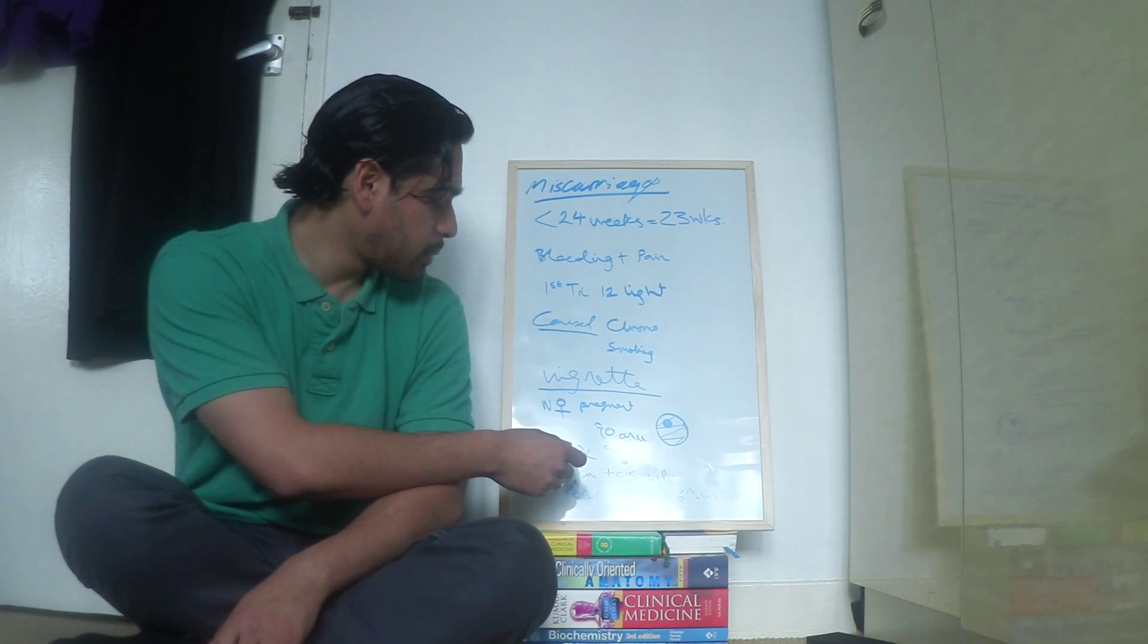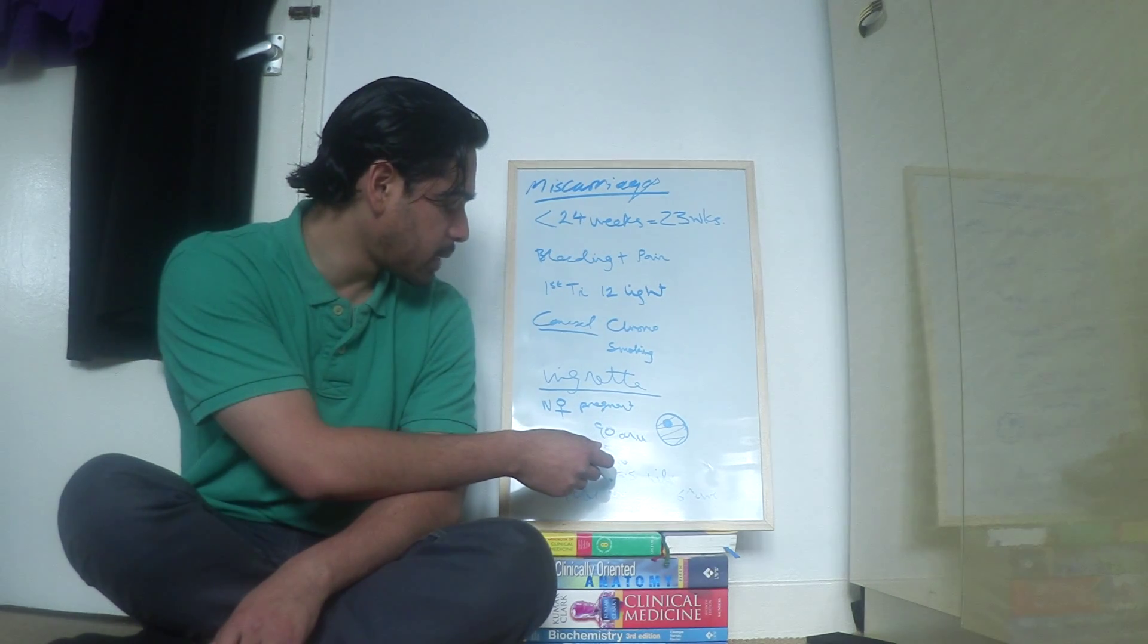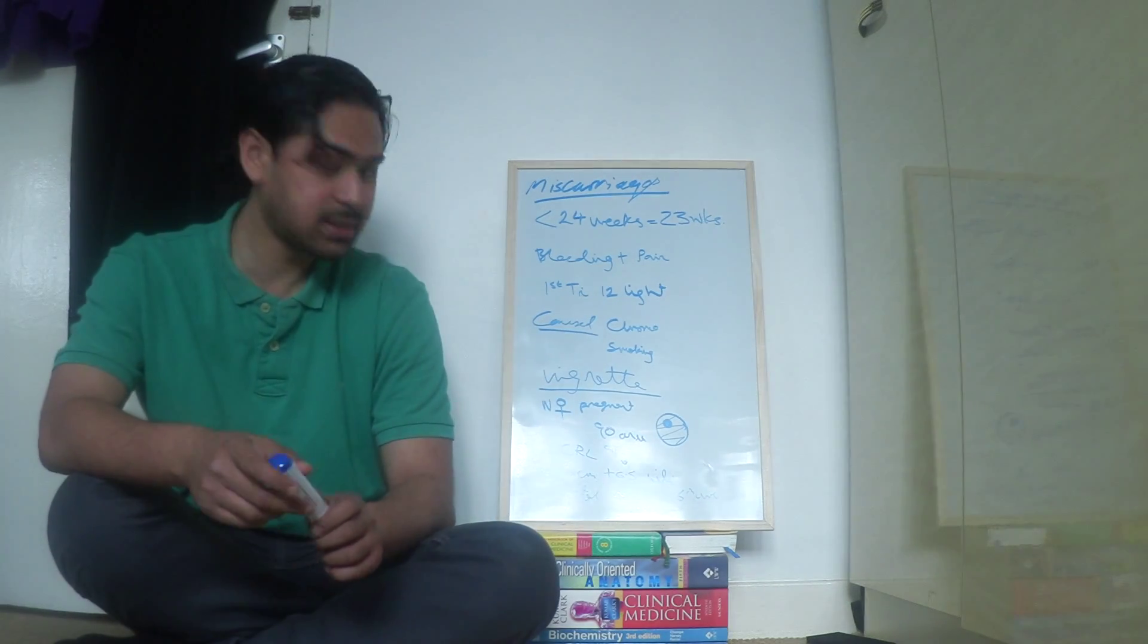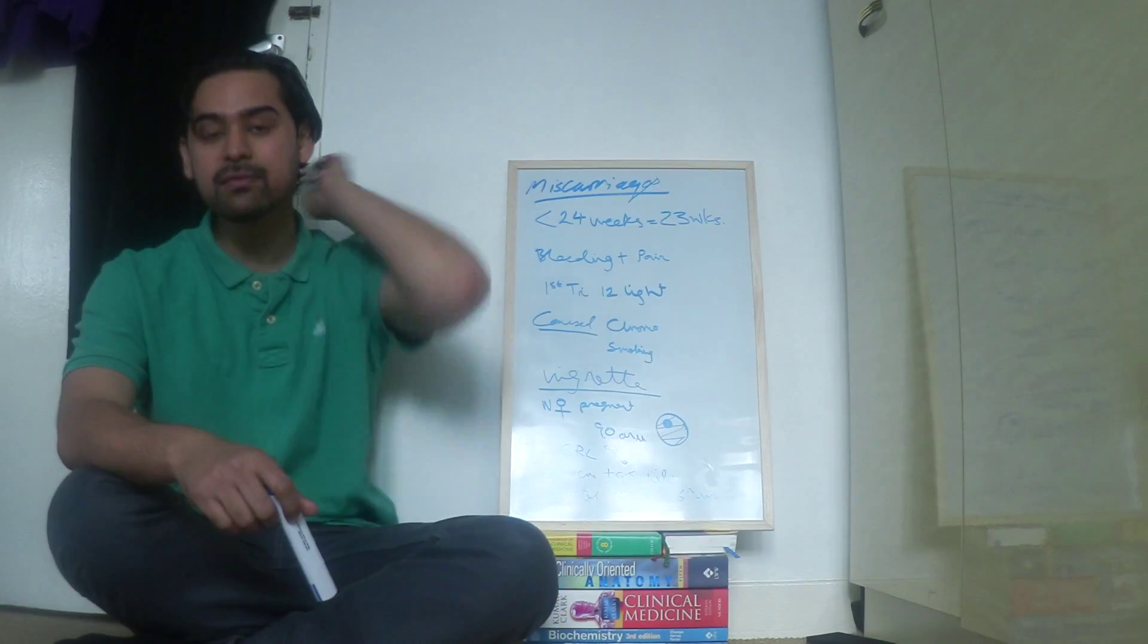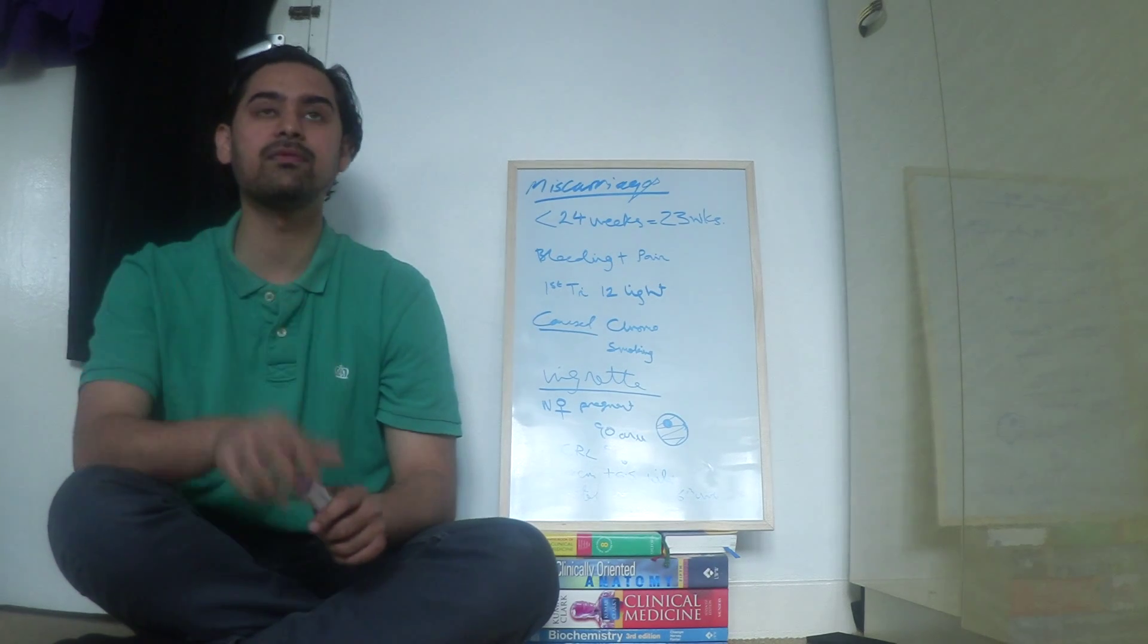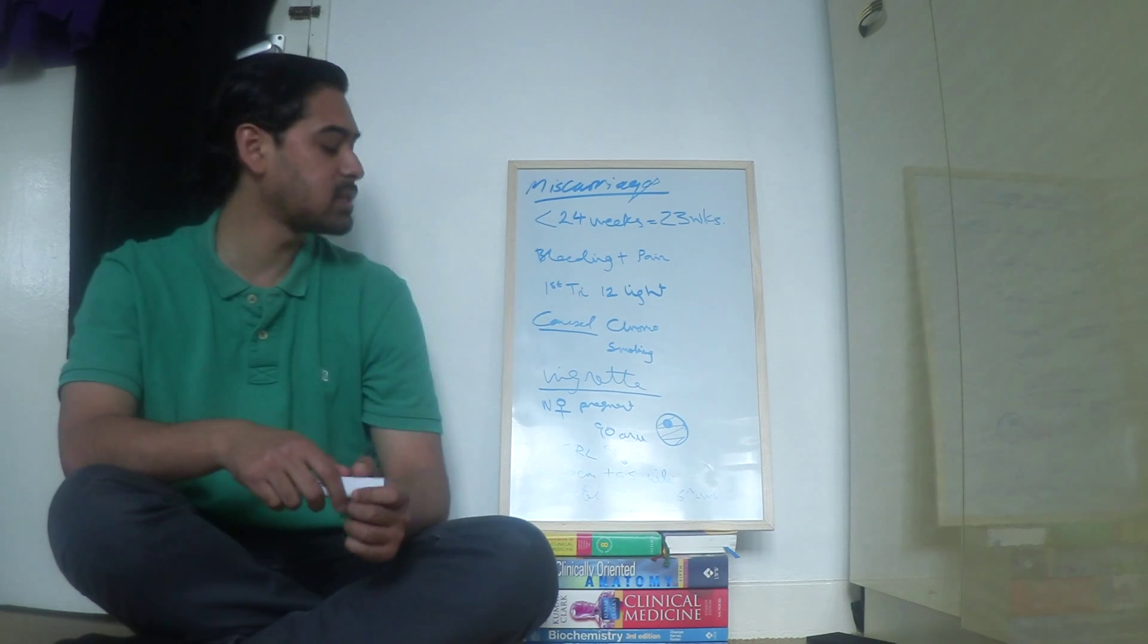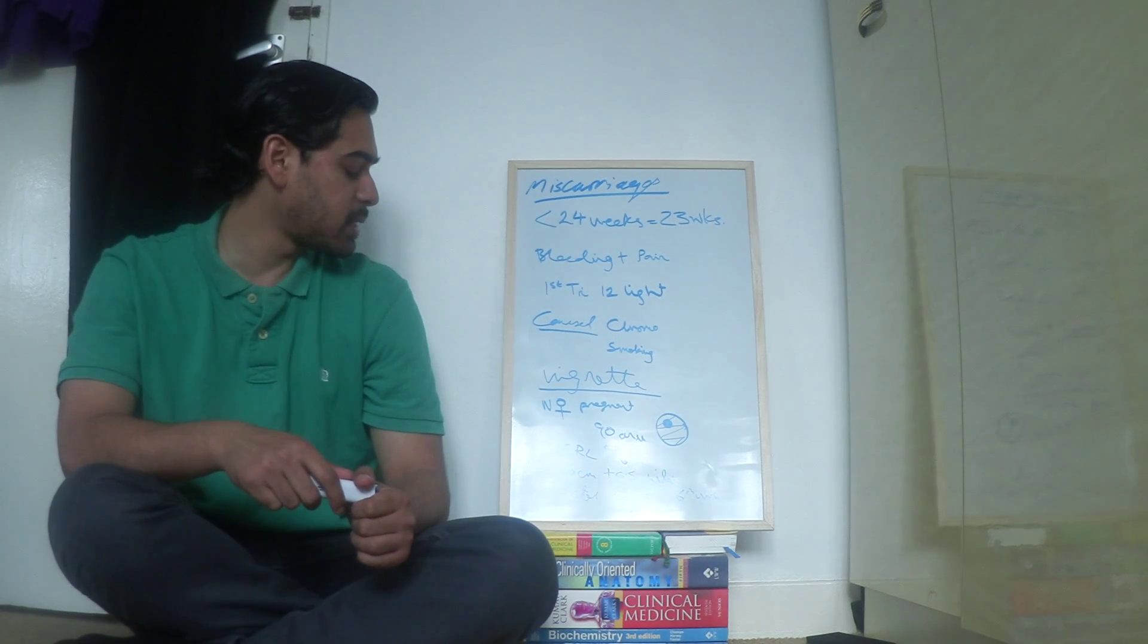This is from Wikipedia. You add 6.5 on top and that will give you the gestational age. So if the crown rump length is 6 cm, you add 6.5 which is 12.5. So the pregnancy is about 12 to 13 weeks into pregnancy with a crown rump length of 6 cm.